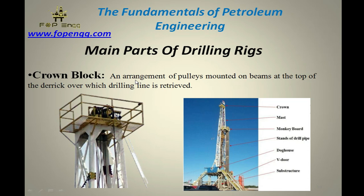Crown block — an arrangement of pulleys mounted on beams at the top of the derrick, from which the drilling line is retrieved. This is the crown block from which the drilling line is retrieved. Here is a very good diagram showing where the crown block is located — it is at the top part of the drilling rig.